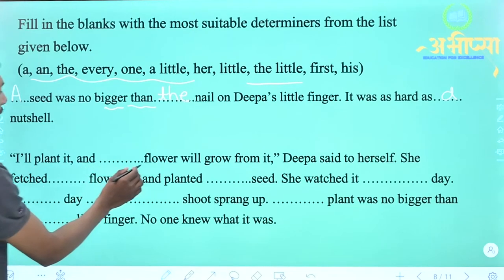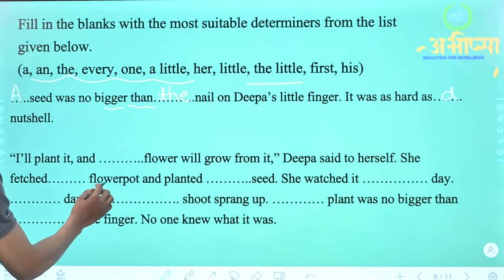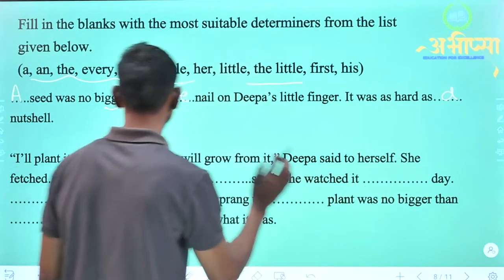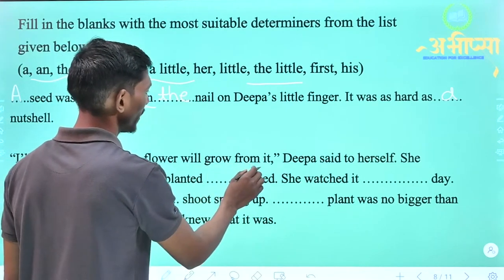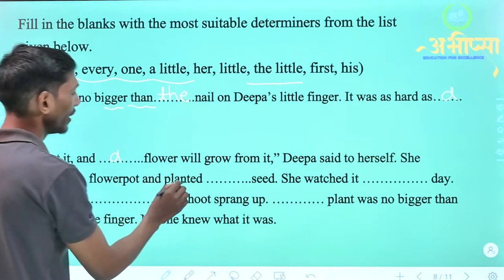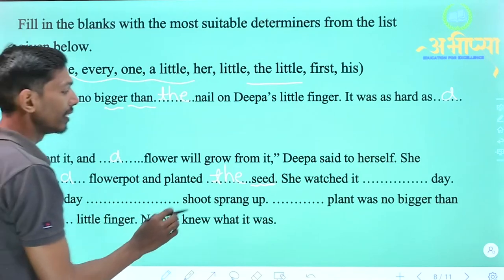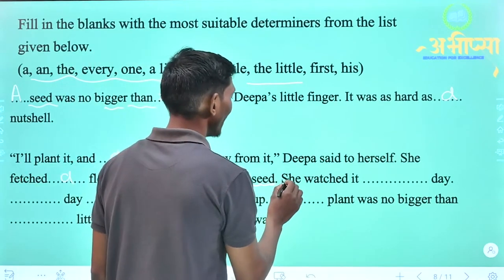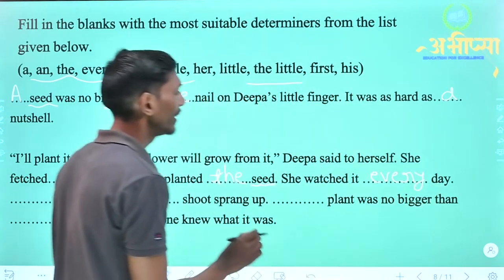'I will plant it and ___ flower will grow from it,' Deepa said to herself. She fetched ___ flower pot and planted ___ seed. She watered it ___ day. Pehle blank mein 'a' aayega — 'a flower will grow.' Doosre blank mein 'a' — 'a flower pot.' Teesre blank mein 'the' aayega — kyunki 'seed' word pehle aa chuka hai, repeat hua hai, isliye 'the seed.' Yadi koi word repeat hota hai toh hum usse pehle 'the' determiner ka use karte hain. Chauthe blank mein 'every' aayega — 'every day.'